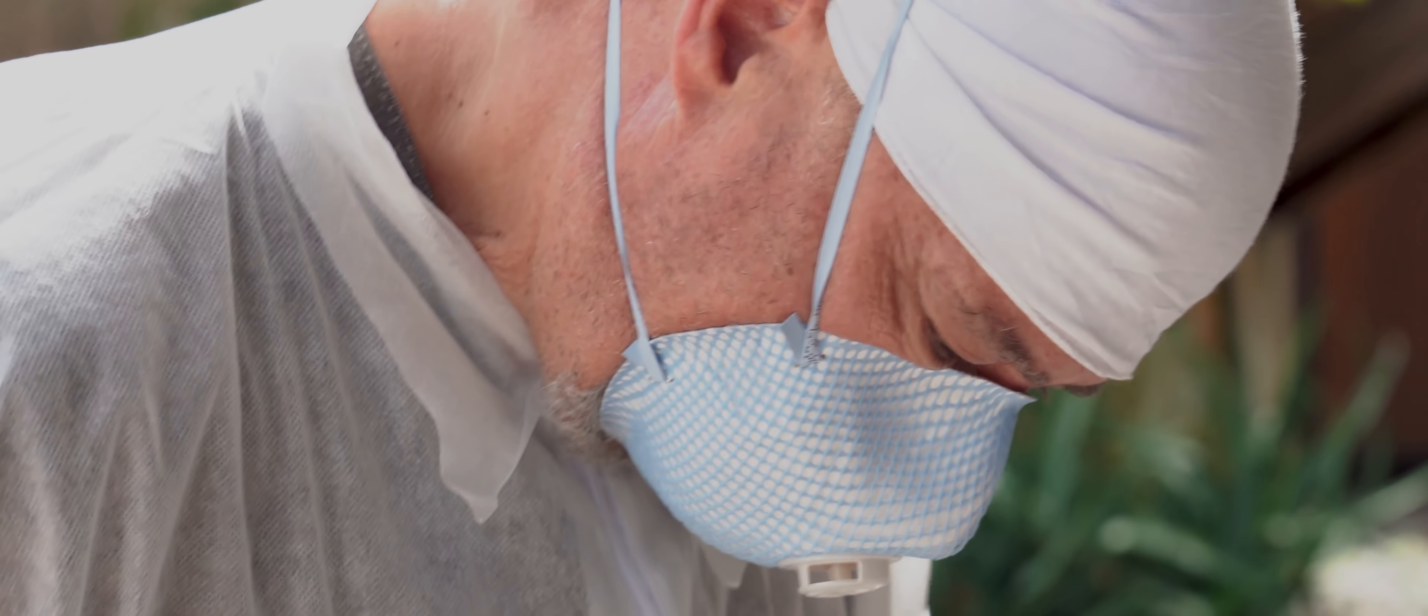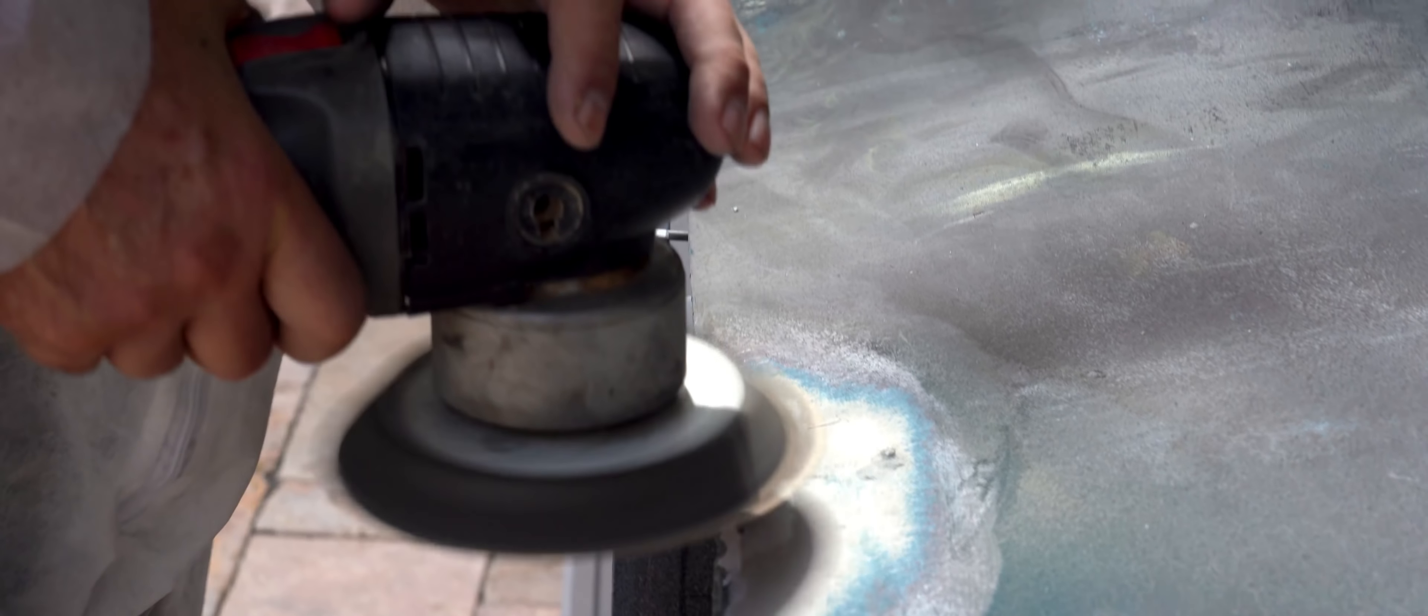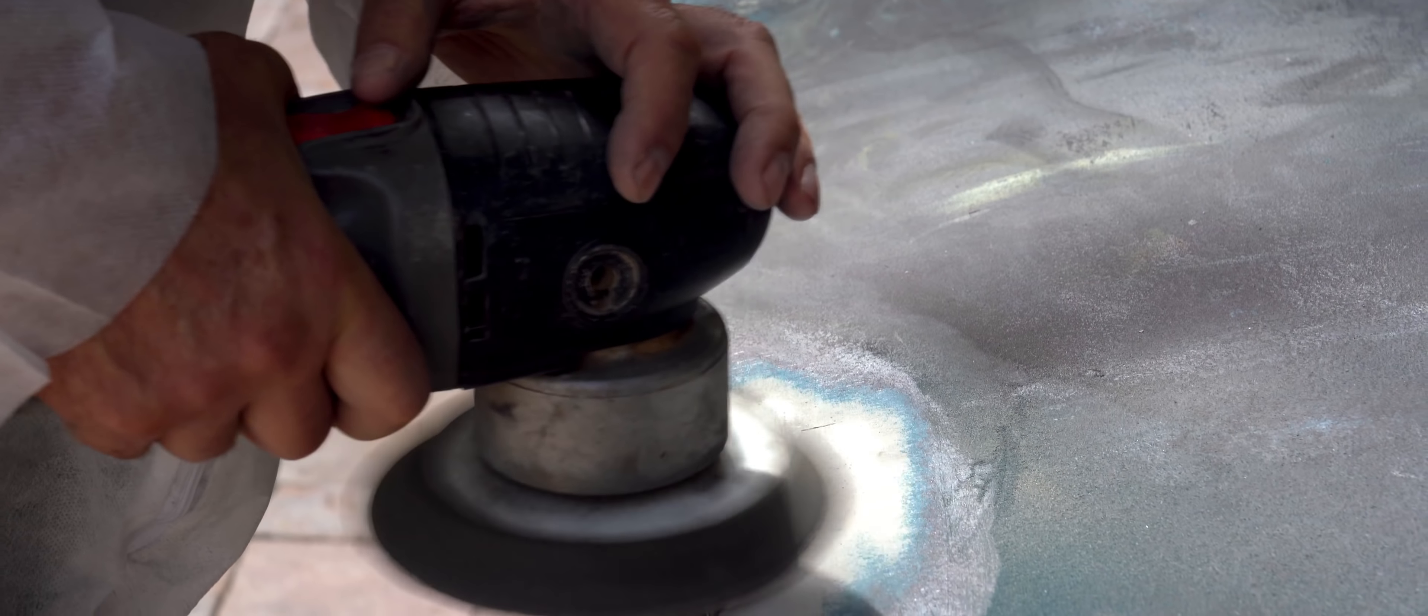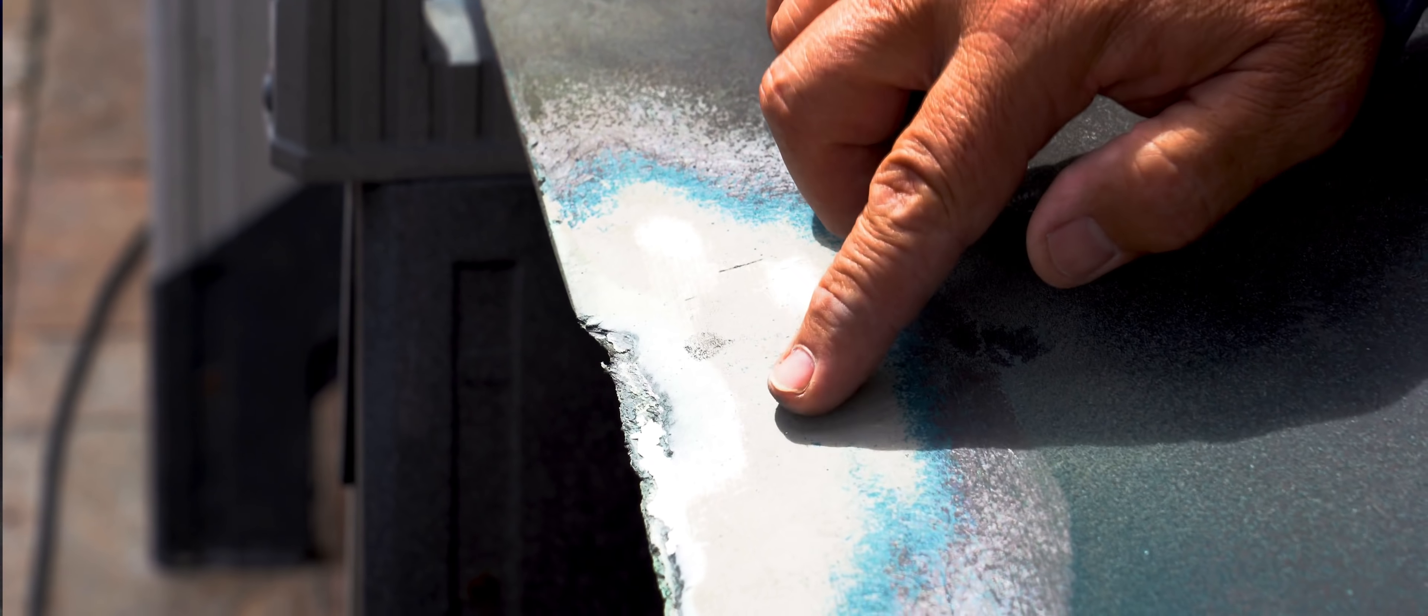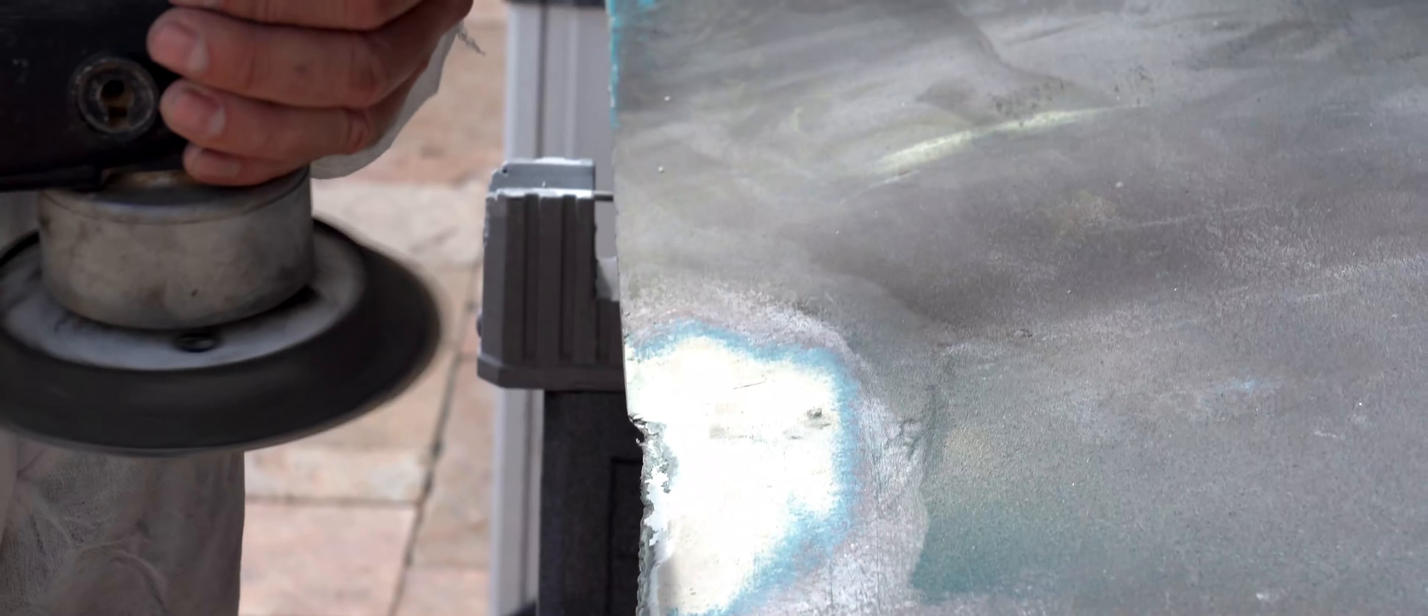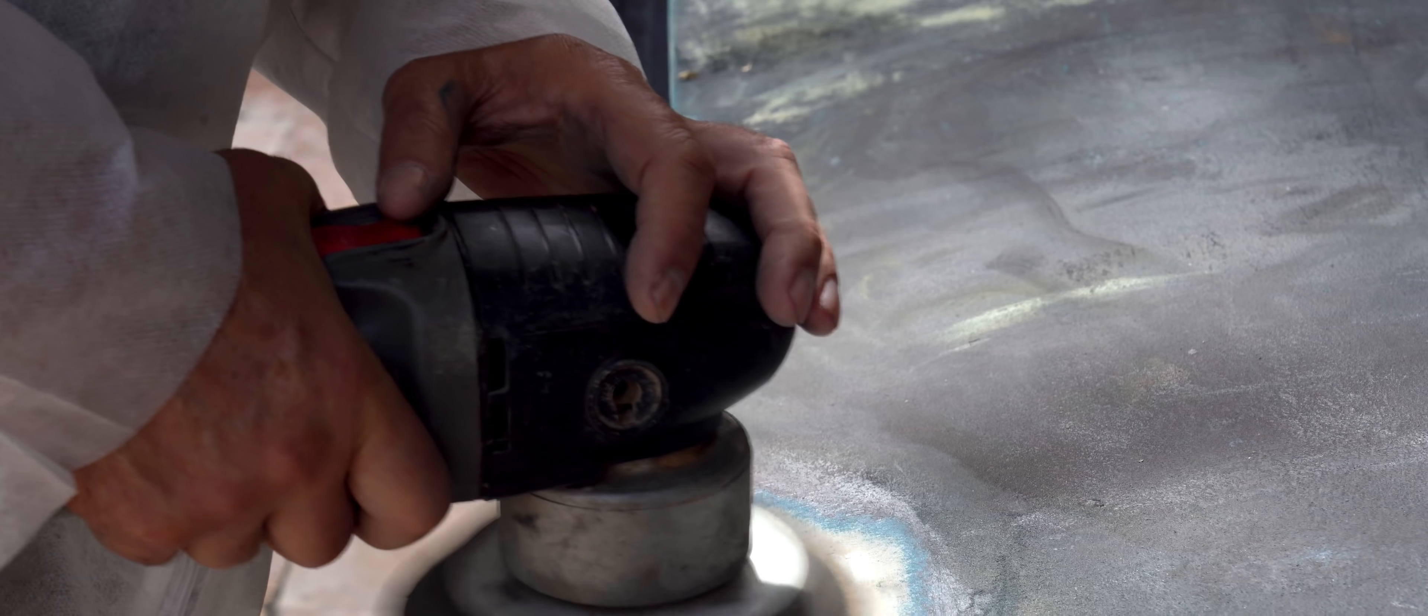Well basically every time you fix composite or fiberglass, first thing you want to do is you want to remove whatever is broken. You cannot adhere new materials to something that is loose, shaky, or kind of cracked. So what we did over here, Pablo started sanding all around the damaged area. In this part over here there was a crack on the trailing edge. Actually it was a little bit smashed out. So he cleaned all the materials first.